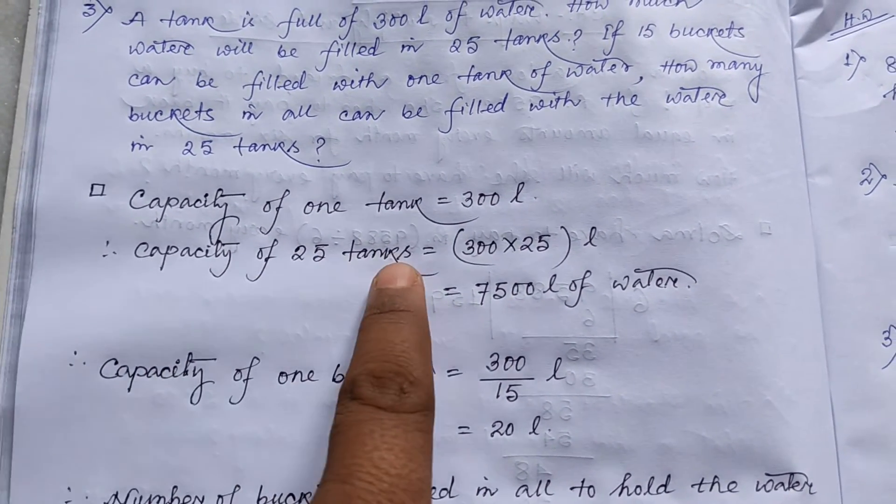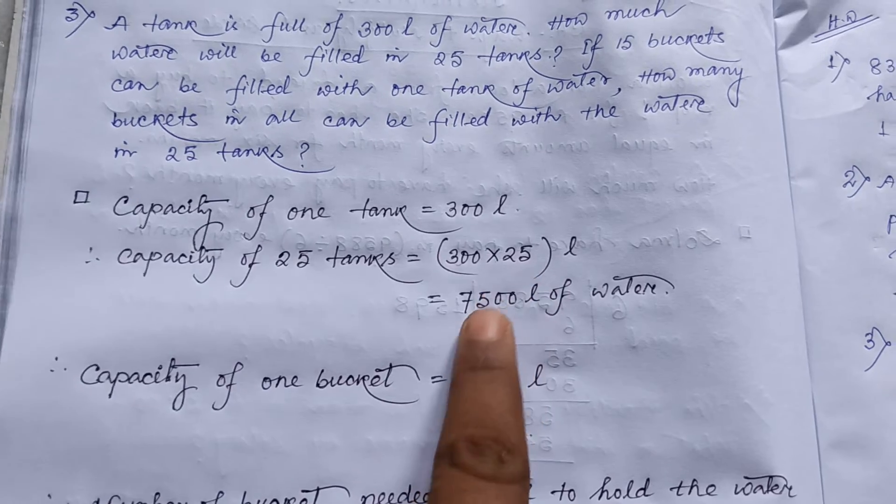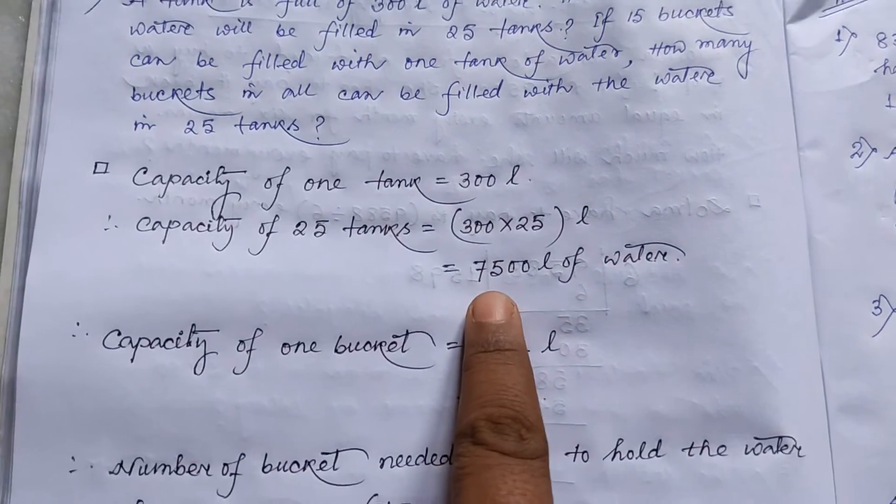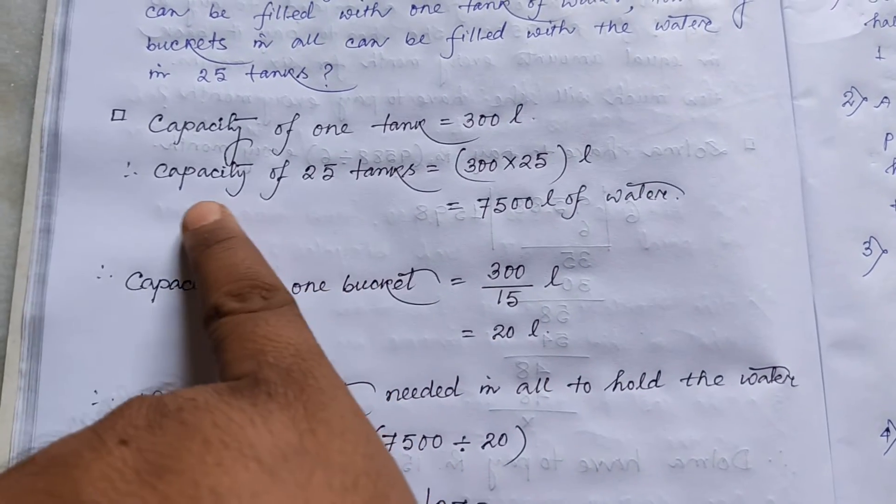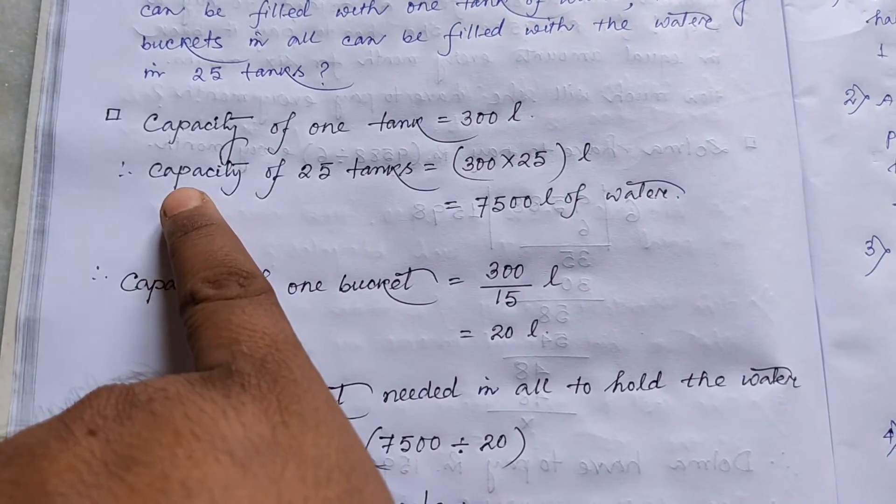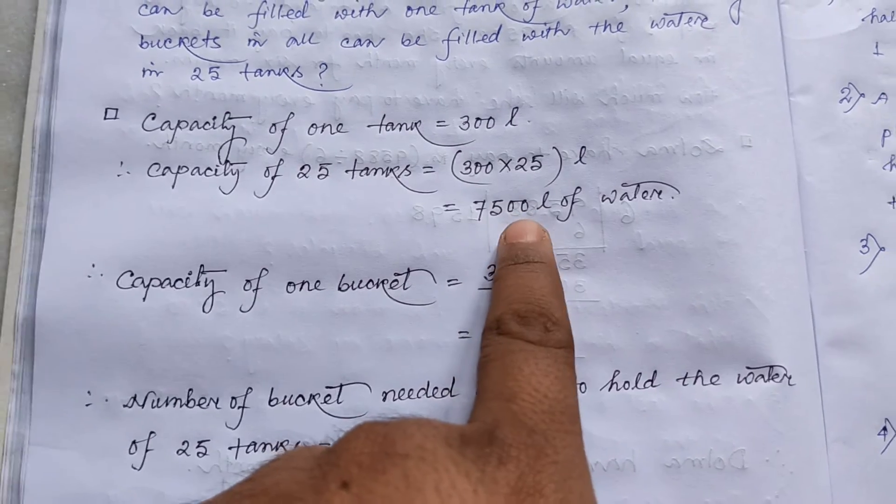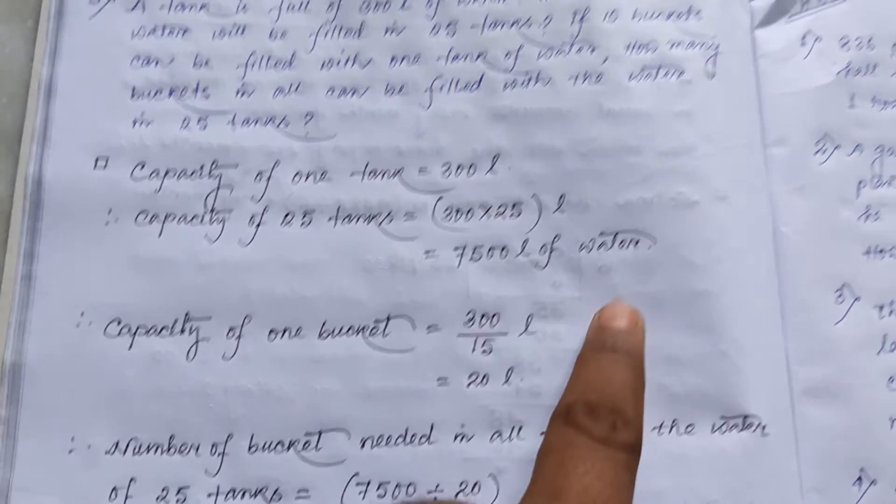So here capacity of one tank is 300 liter. So capacity of 25 tanks, 300 into 25 liter that is 7500 liter of water. So total quantity of water in 25 tanks is 7500 liter of water.